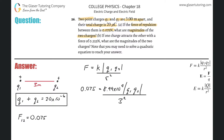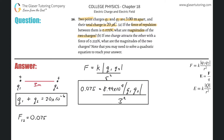Now take a step back. We have this equation and we have the equation Q1 plus Q2 equals 20 times 10 to the minus 6. How many equations? Two. How many unknowns? Two. It's a simple system of equations — anytime you have two unknowns and two equations, it's a straightforward substitution.